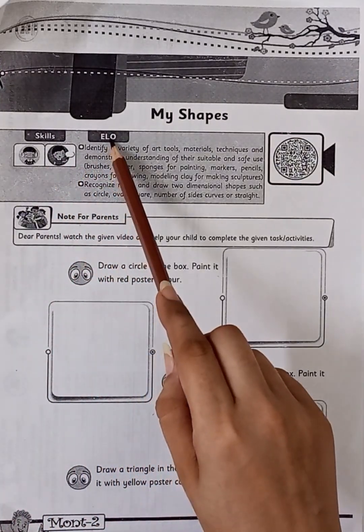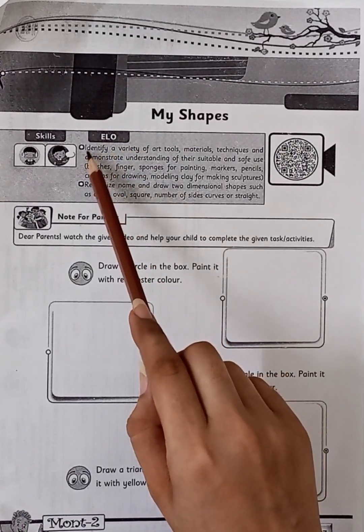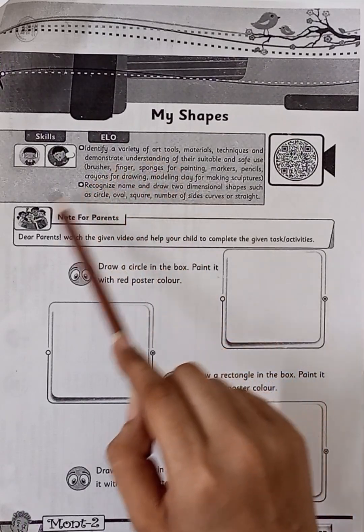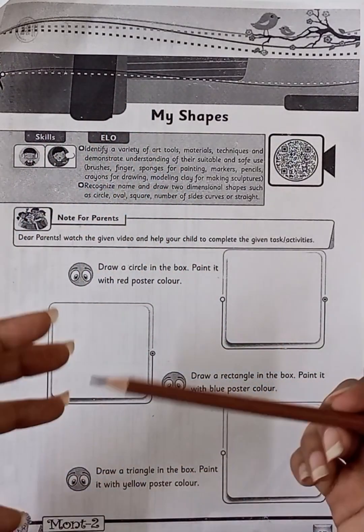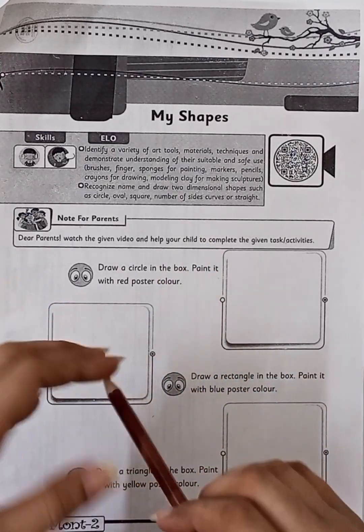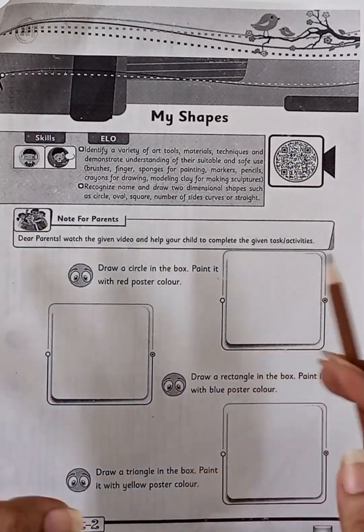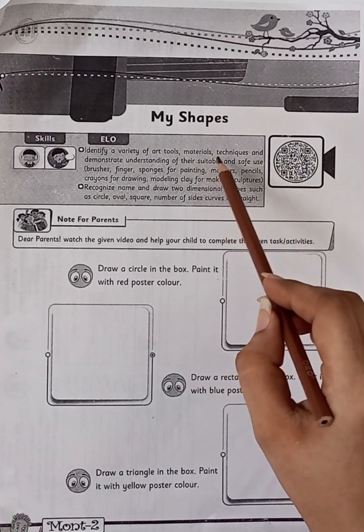Here we have some expected learning outcomes. The first one is identify a variety of art tools. We have different art tools to identify. We use pencil colors, markers, poster colors, brushes and sponges which we use for art.